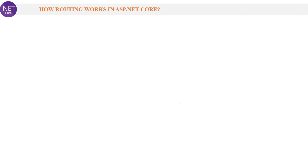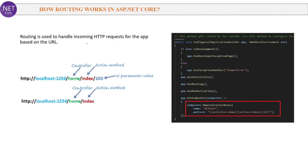Next question: How does routing work in ASP.NET Core? Routing is used to handle incoming HTTP requests based on the URL. In a sample URL, 'home' is the controller, 'index' is the action method and '100' is the id parameter value. In the code snapshot you can see how the default routing has been set inside the UseEndpoints method in the Configure method. This is very similar to ASP.NET MVC.